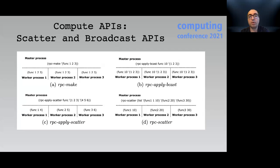In Orca, the master process distributes data or function parameters either by broadcasting or scattering to all worker processes. Here we list the Orca's compute APIs, and one of them is RPC make. RPC make accepts arbitrary user code in the form of symbolic expression, and when invoked, worker processes execute exactly the same expression and return the result back to the master process.